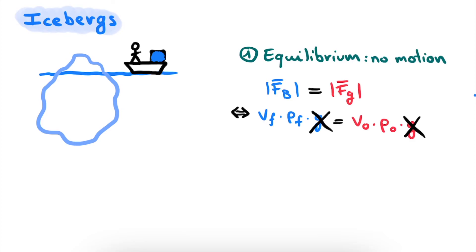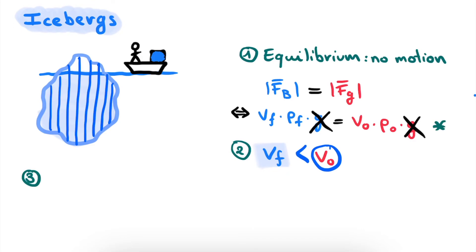Now in contrast with the previous case, the object here is not completely submerged in water and therefore Vf is not equal to Vo. And this does not surprise us because the ratio of these two volumes is exactly what we are looking for. Rearranging this equation, we find that Vf is equal to the volume of the object multiplied by the ratio of the density of the object divided by the density of the fluid.